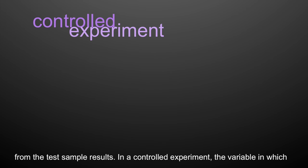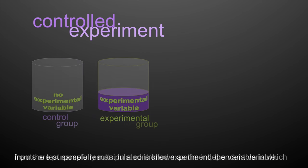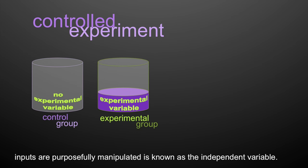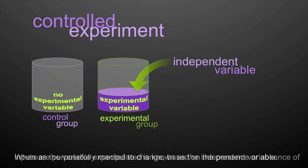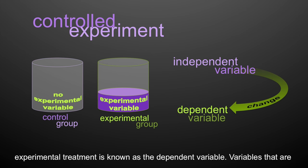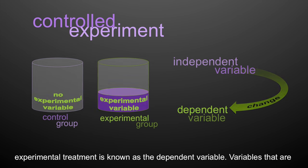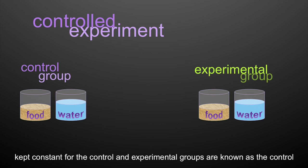In a controlled experiment, the variable in which the inputs are purposefully manipulated is known as the independent variable, whereas the variable expected to change based on the presence or absence of an experimental treatment is known as the dependent variable. Variables that are kept constant for the control and experimental groups are known as the control variable.